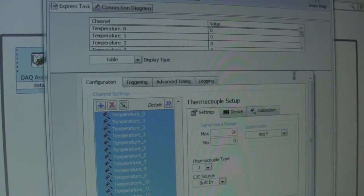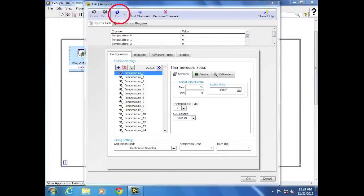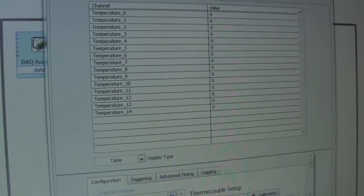Pull down the drop-down screen so that all channels can be read, and select Run to test each channel. Each channel number has a corresponding thermocouple.